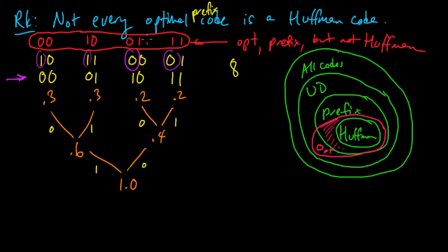So this is optimal and prefix, but not Huffman. That was a simple example to illustrate the implications shown in this diagram.